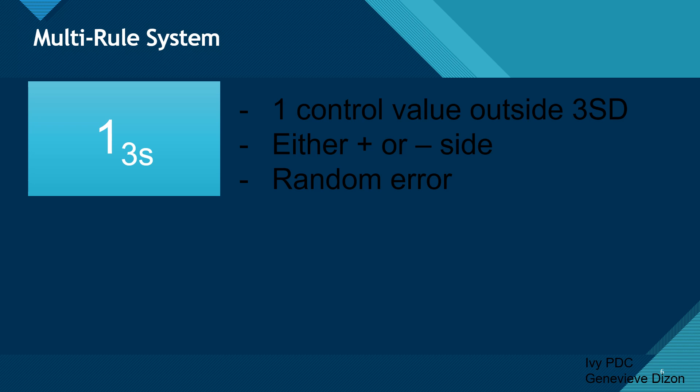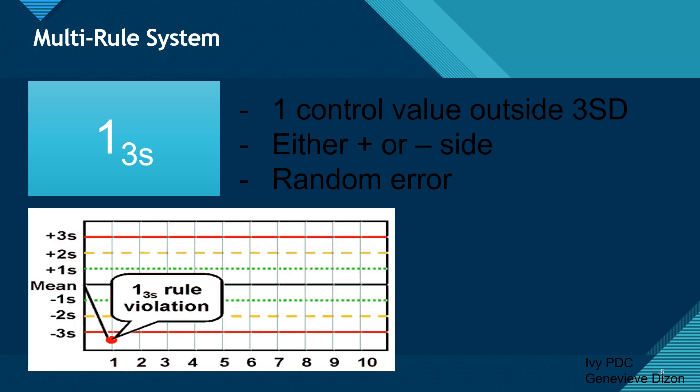The second rule is the 1-3-S rule, which means there is one control value located outside the three standard deviations. It can be either on the positive or negative side, and this is also considered a random error. If our data is outside the 3-SD, this is a violation of the 1-3-S rule. If we have a 1-3-S violation, we need to reject the results — we can't continue with testing. We need to reject the results that were run together with this control, because a 1-3-S identifies an unacceptable random error and may also be the beginning of a very large systematic error.